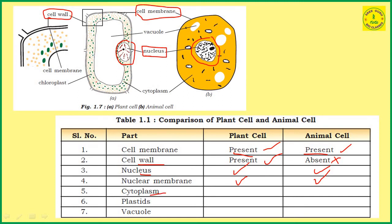Next, cytoplasm. Cytoplasm is present in both plant cells and animal cells. Next, plastids. The colored bodies present in the cytoplasm are known as plastids, also called chloroplasts. The chloroplast is present especially in plant cells, but animal cells do not have plastids. So plastids are present in plant cells and absent in animal cells.